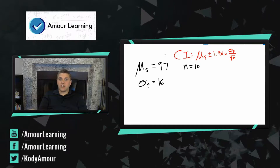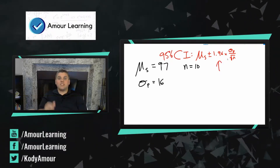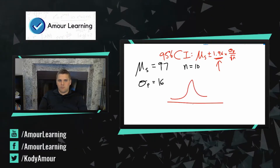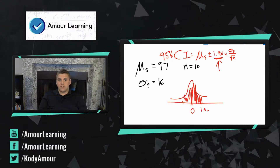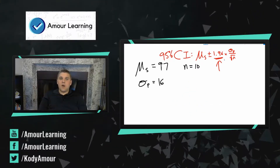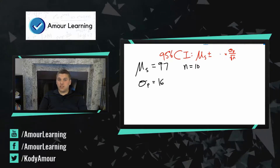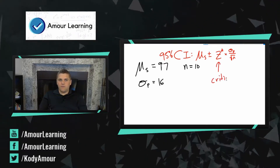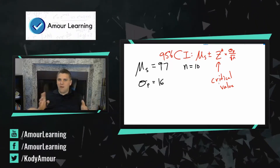This is actually the formula specifically for the 95% confidence interval. The number 1.96 should be familiar — it comes from the problem where we found which Z scores captured the middle 95%, and it turned out to be positive 1.96 and negative 1.96. There is a special notation for this number: it's called Z-star. Z-star represents what's called the critical value. For 95%, that number is 1.96.